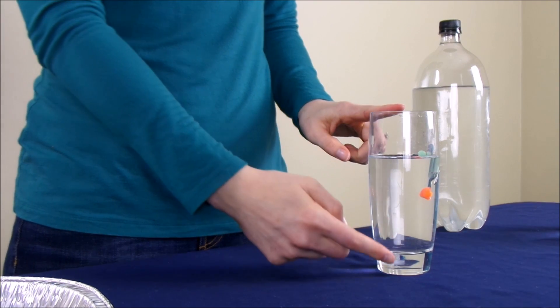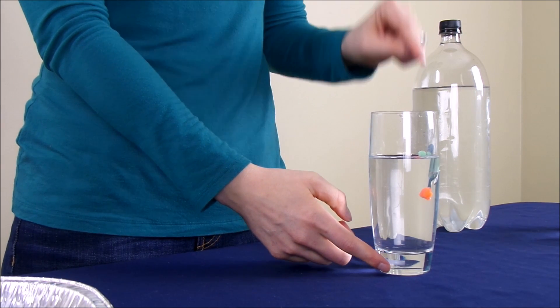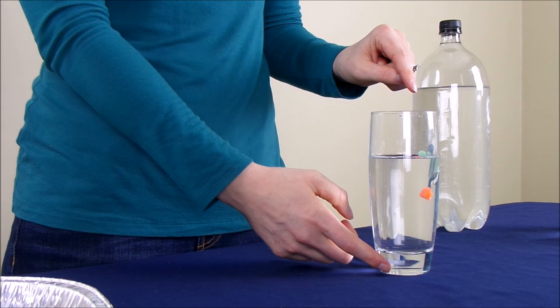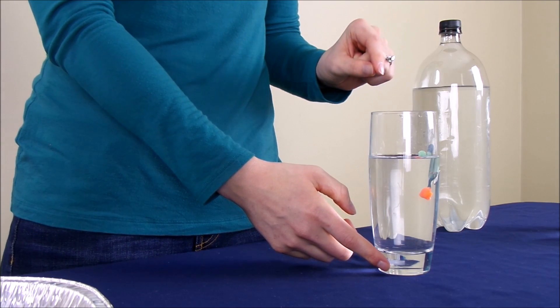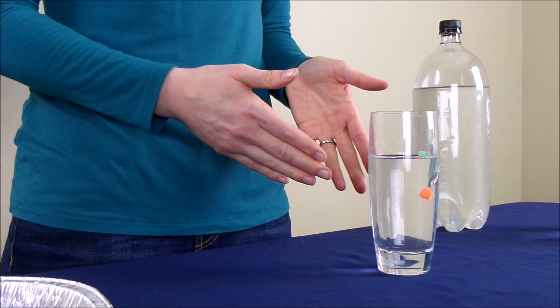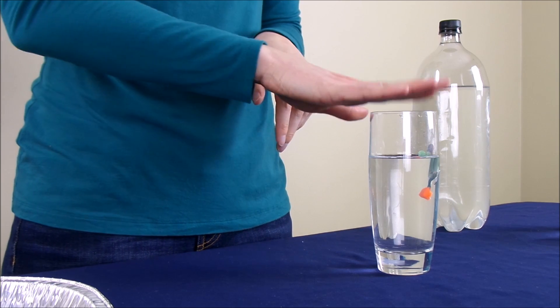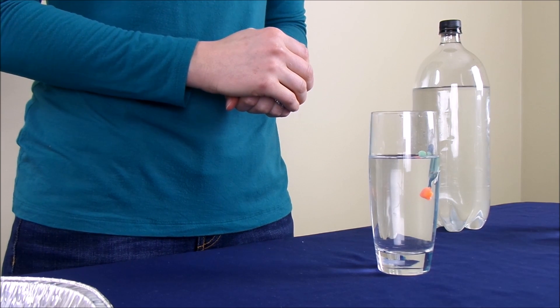If for some reason the diver sinks to the bottom of the glass, it's likely because there's a hole in the straw. If that happens, you're going to want to follow the steps to create a new scuba tank for him and test him again. Once you have a diver that floats at the top of the drinking glass, you're ready to move to the next step.